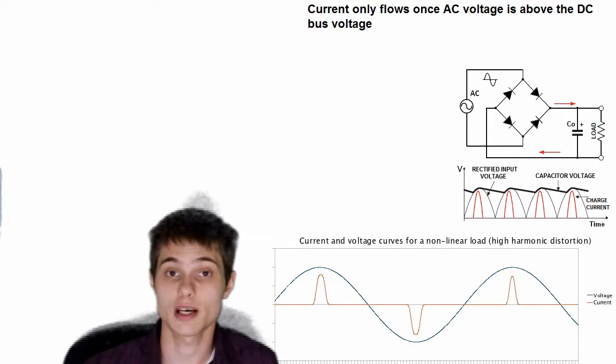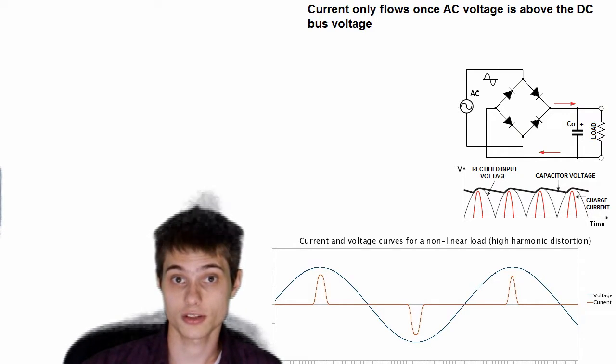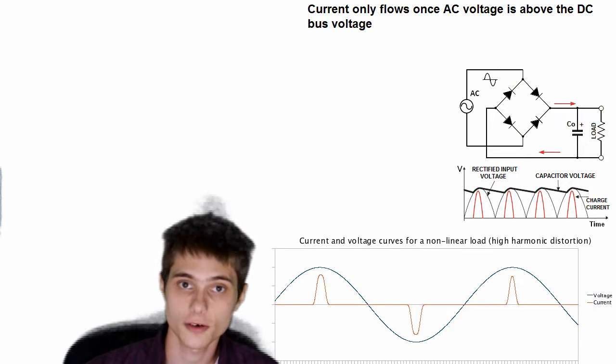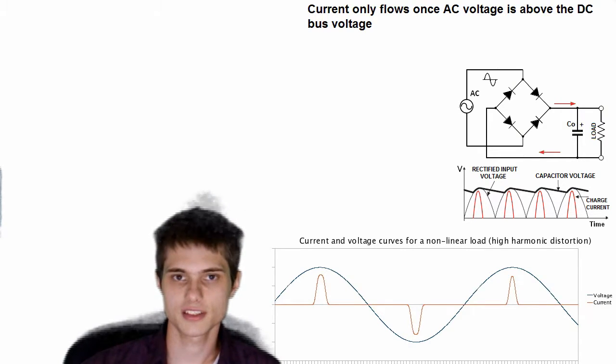But when you're using a different type of load, in the case of power electronics, like I said, we're talking about a non-linear load. Then the power factor can get very low, could be 0.8, 0.7, maybe down to 0.5, even lower. But how does this get messed up with a non-linear load?